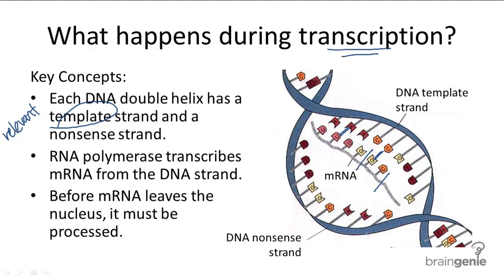The mRNA is riddled with sections of unnecessary nucleotides that need to be removed. The non-coding regions that are removed are called introns — 'in' for interfering regions. The regions that actually travel out of the nucleus are called exons — 'ex' for expressed regions. So introns: interfering; exons: expressed.